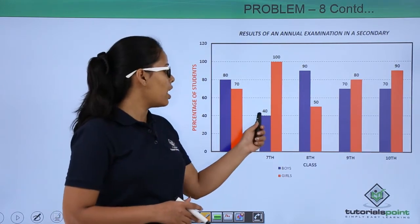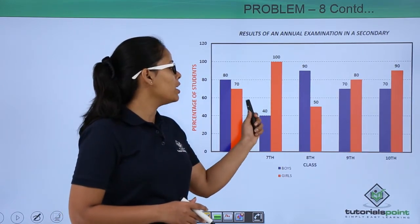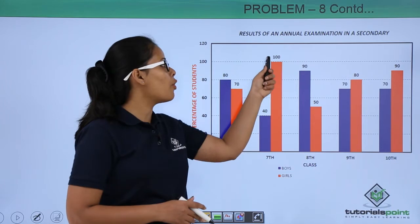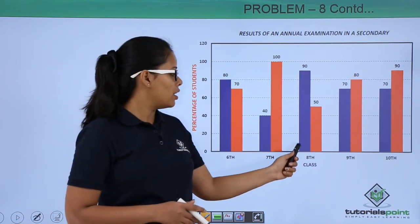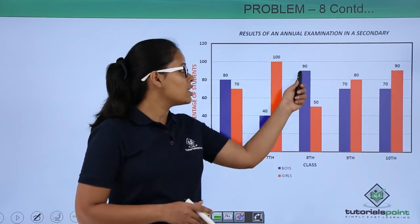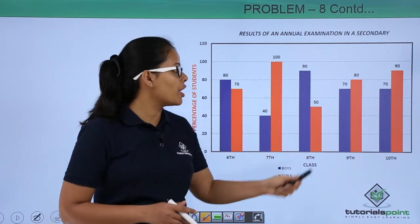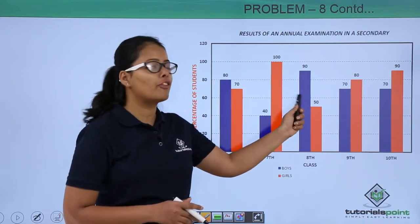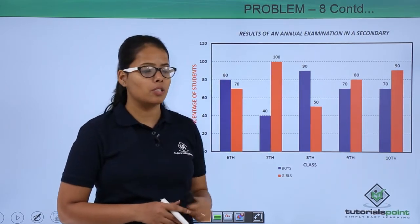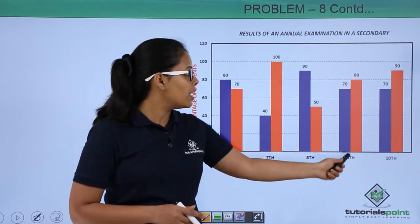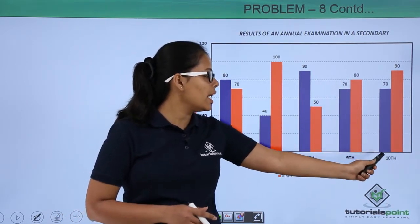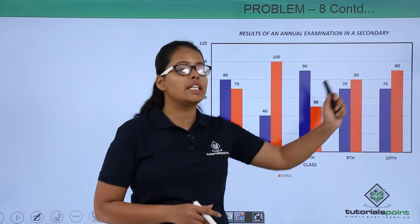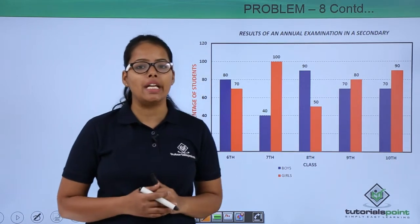In 7th class, 40% of boys got passed and 100% of girls are passed. In 8th class, 90% of boys passed and 50% of girls passed. In 9th class it is 70% and 80%, and in 10th class it is 70% and 90%.